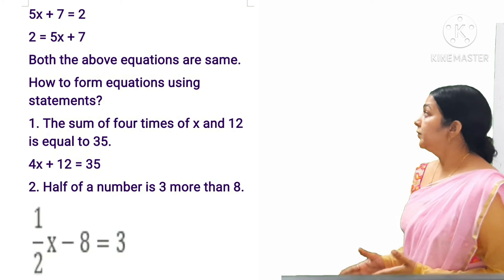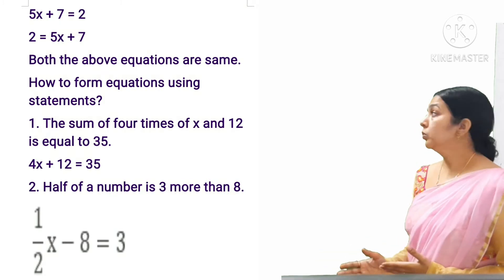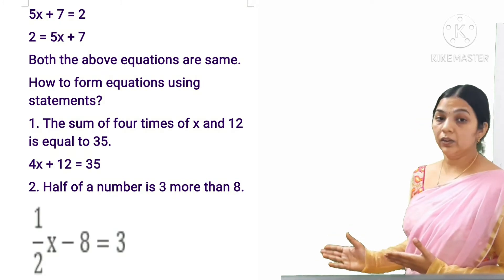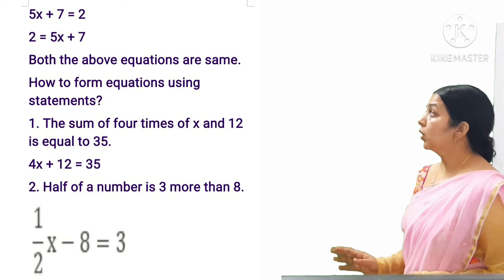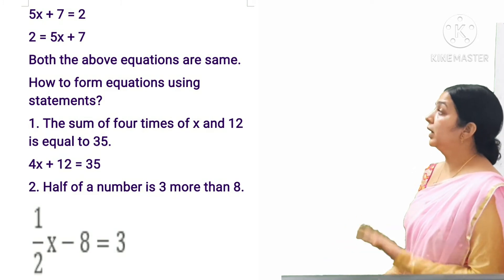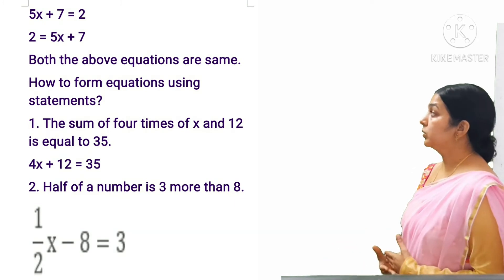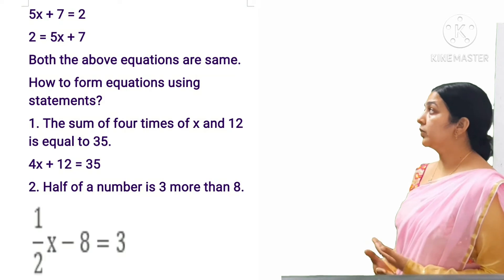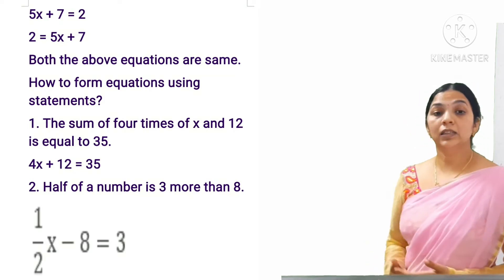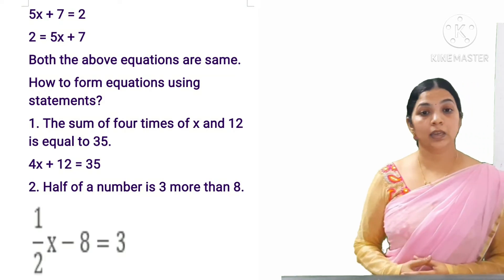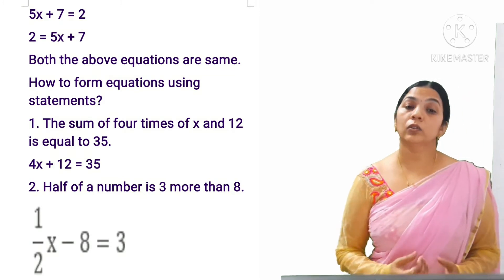For example, 5x + 7 = 2 is an equation. If we swap LHS and RHS — that is, 2 = 5x + 7 — it remains the same. So both forms of the equation are equivalent.